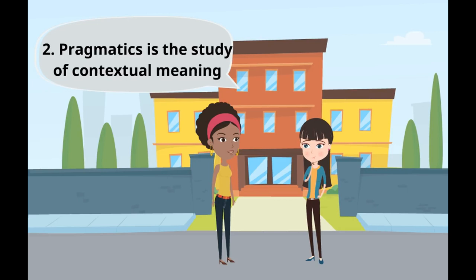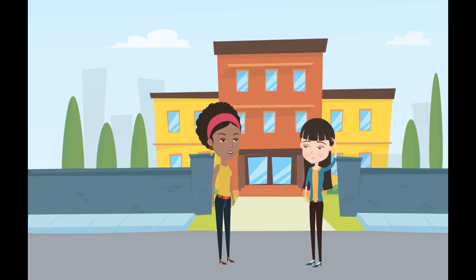The second dimension is the study of contextual meaning — it is about the interpretation of what people exactly mean in a specific context and how the context influences what is said. For example, if you are at my place and I ask you to bring me a glass of water, the utterance doesn't fit the context because usually I would offer you something to drink, not the other way around.